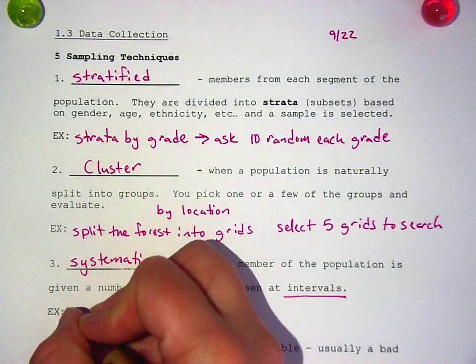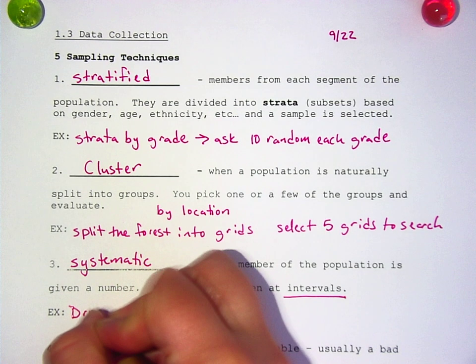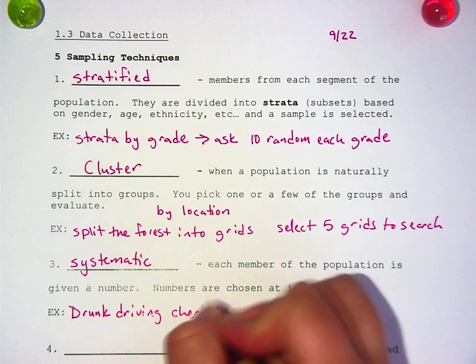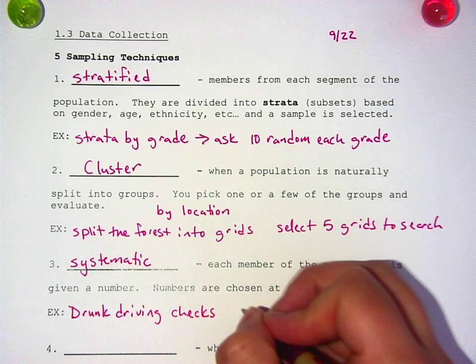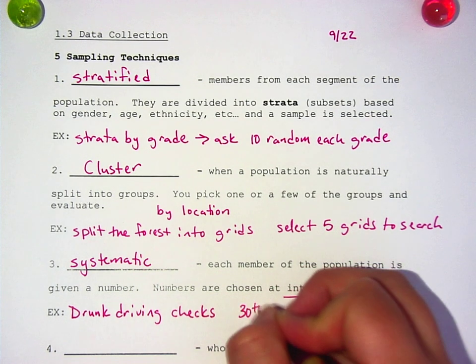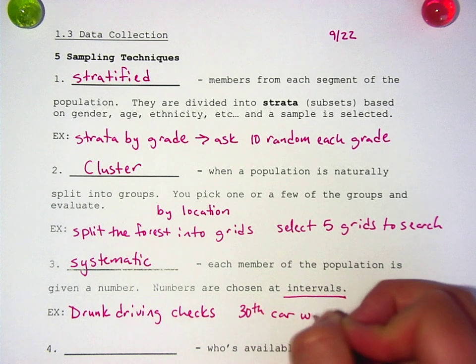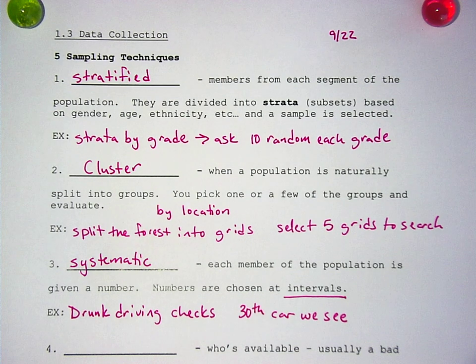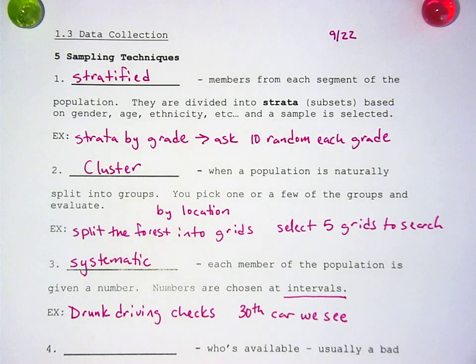Sometimes they'll do this with drunk driving for pullovers, for checks. They'll be like, every 30th car we see, we're going to pull over. So you pick a number. We'll talk to every fifth person. We'll talk to every 20th person that we see walk down the hallway. We're going to ask that person who it is or what they think.